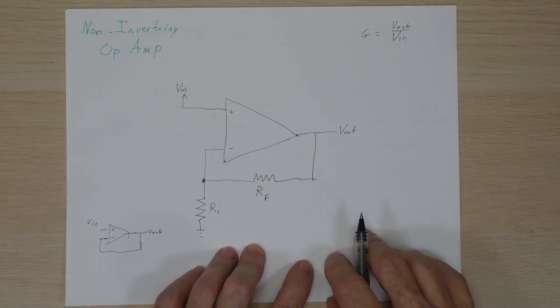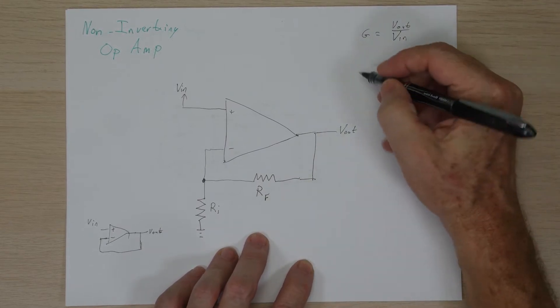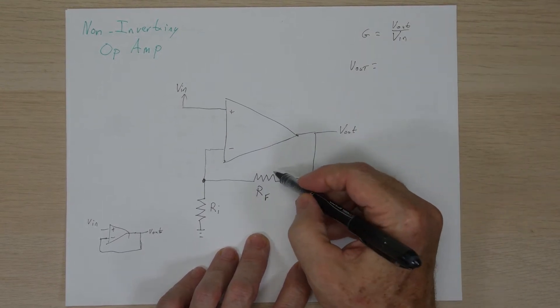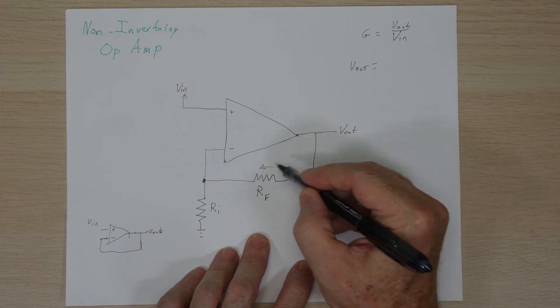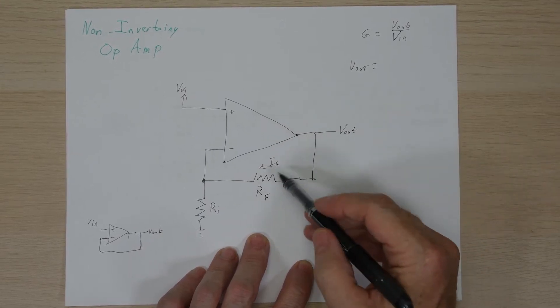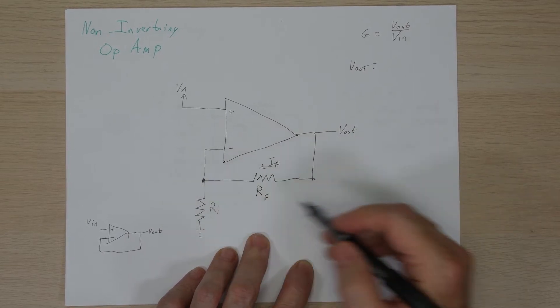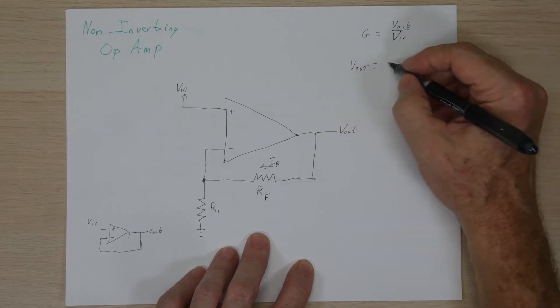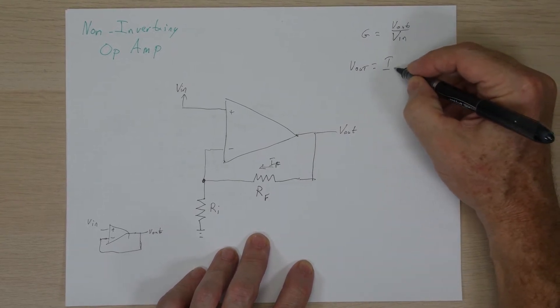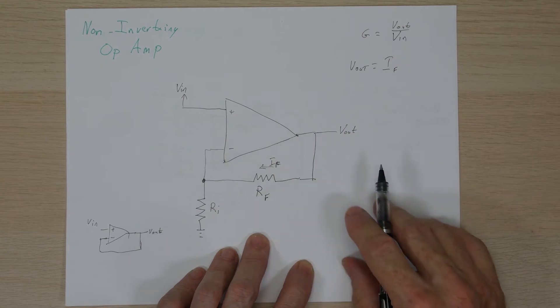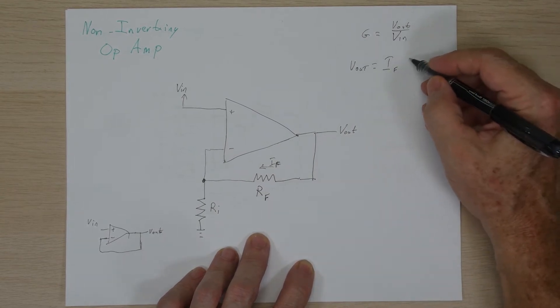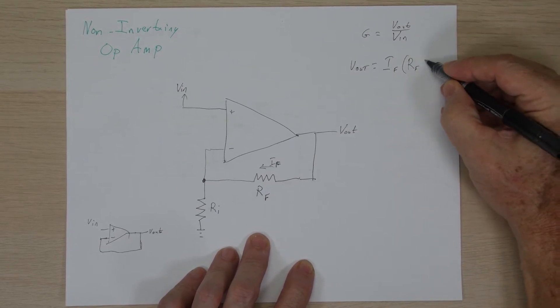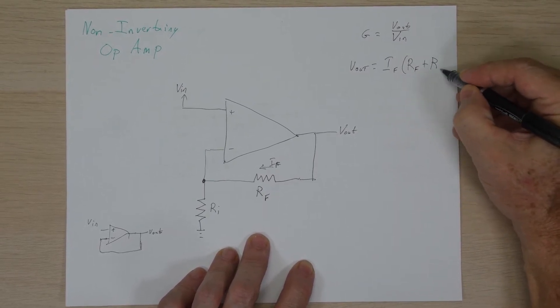So also, from Ohm's Law, we know that the voltage output will be equal to a current, the current flowing through this portion of the circuit. And let's just go ahead and call this IF, meaning the current through the feedback portion of the circuit. And so the voltage out will be equal to the current of the circuit times the resistance, which is the addition of these two. So it'll be times RF plus R1.